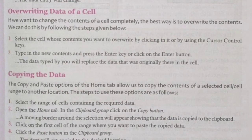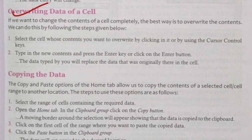If we want to change the content of a cell completely, the best way is to overwrite the content. Follow these steps: first, select the cell whose content you want to override by clicking on it or by using the cursor control keys. Then type the new content and press the Enter key or click the Enter button. The new data will replace the data that was originally in the cell.